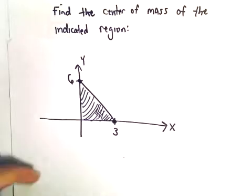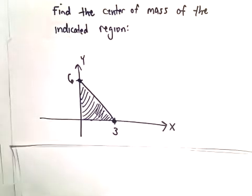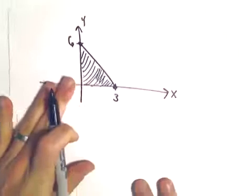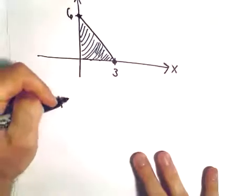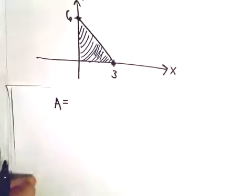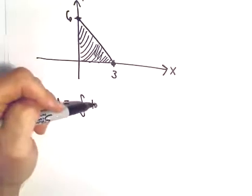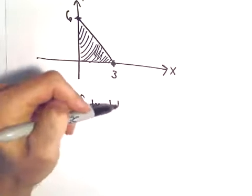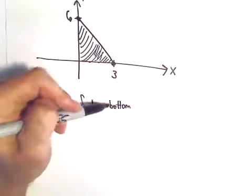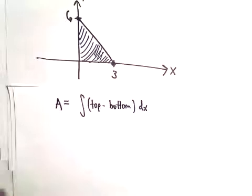Usually the first thing I do is calculate the area, since we need that for both x-bar and y-bar. Normally to figure out the area in this case, we would integrate. We would do the top curve minus the bottom curve. That's what I would do in this case, integrate with respect to x.